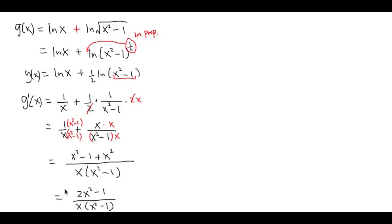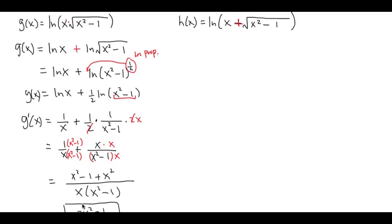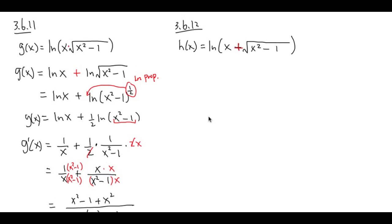So the answer for number 11 is (2x squared minus 1) over x times (x squared minus 1). Now let's take a look at number 12. Once again, they look very similar, but in this case we cannot separate into two ln's. The ln property only works if you have ln of a product — here it's a sum. We just have to keep it as is and go ahead and apply our calculus: the ln rules and the chain rule.